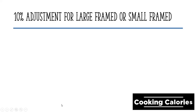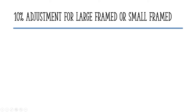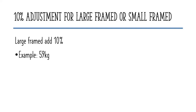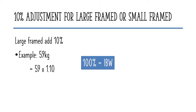Now we will adjust the ideal body weight if the patient is large-framed or small-framed. To determine body frame size, a link will be posted in the description box below. For large-framed individuals, we add 10% to the calculated ideal body weight. For example, if the weight is 59 kilograms, multiply 59 by 1.10. We use 1.10 because 100% represents the ideal body weight and we added 10%. So, 59 multiplied by 1.10 equals 64.9 kilograms.